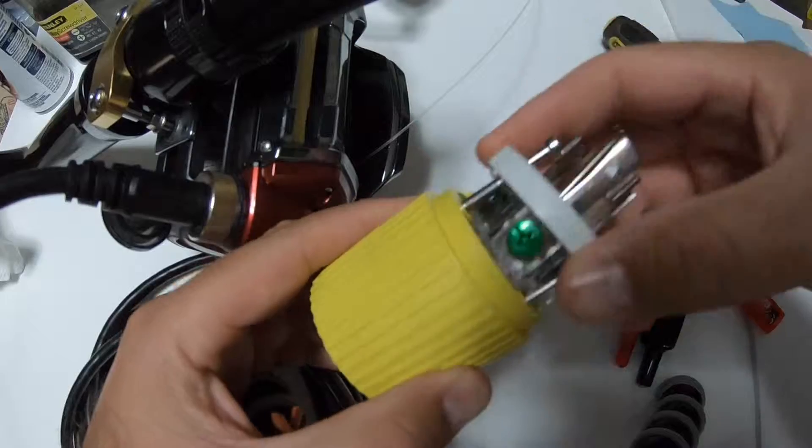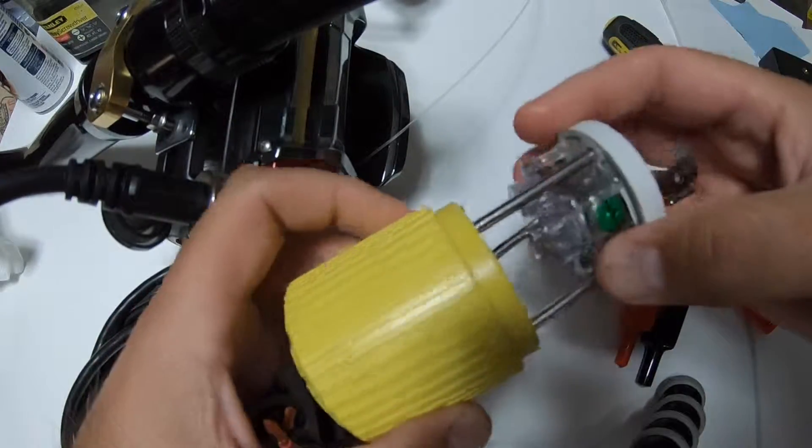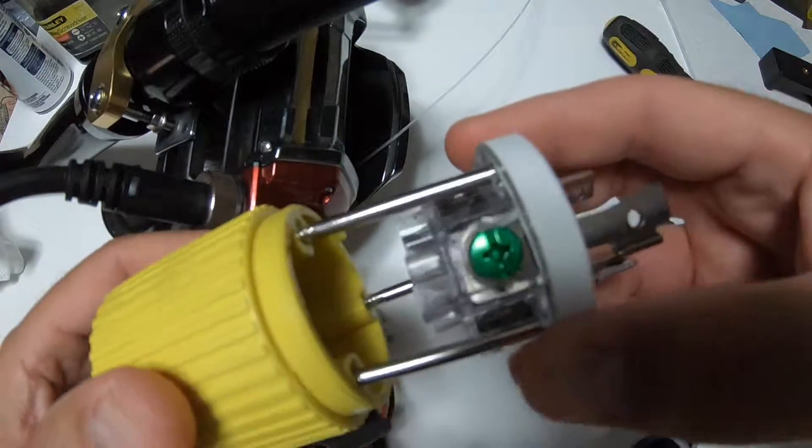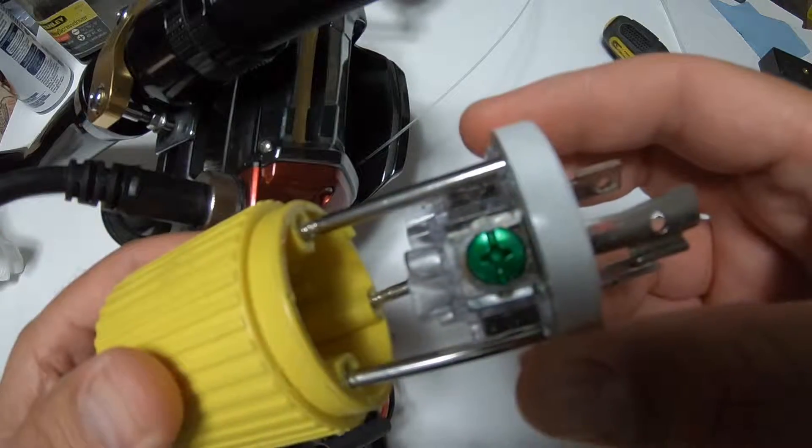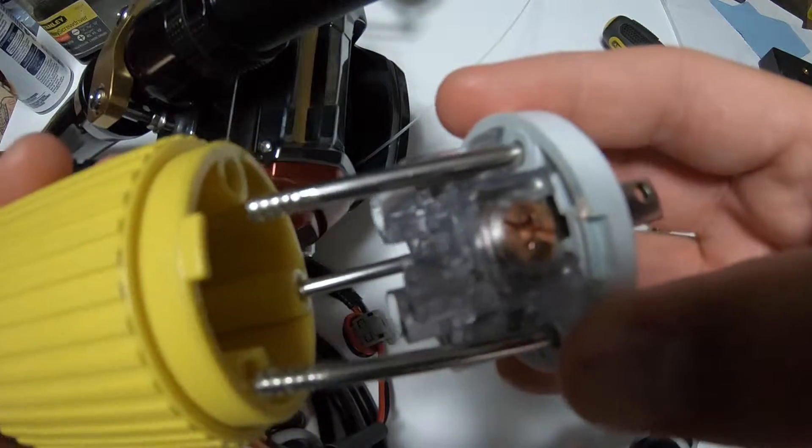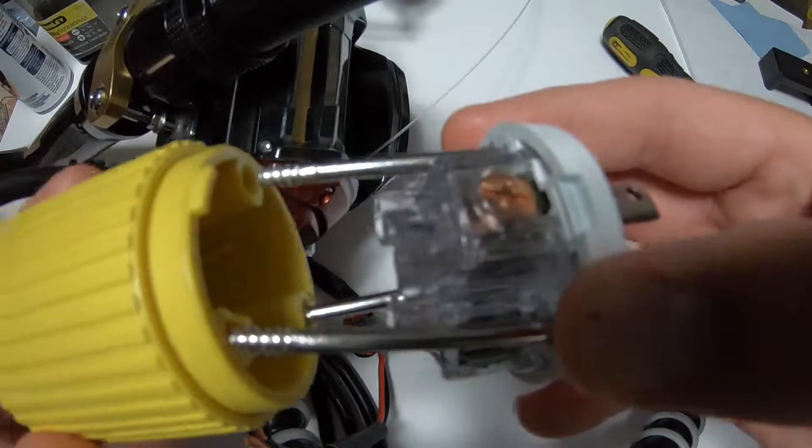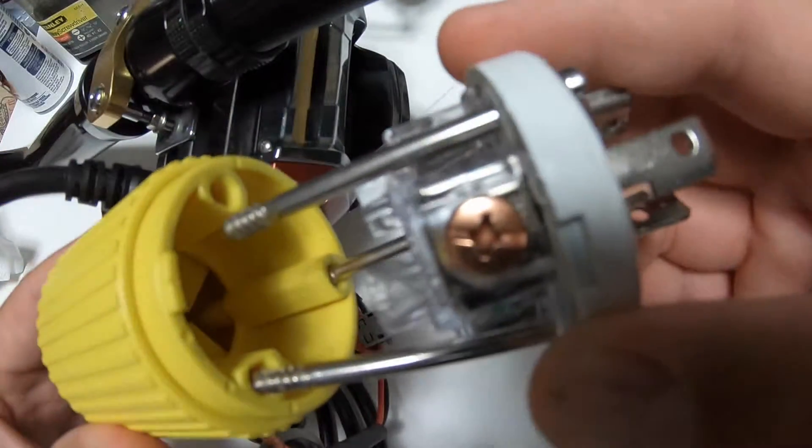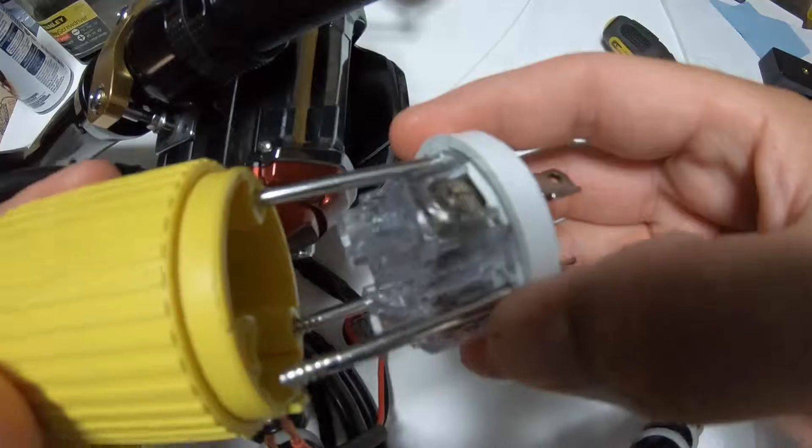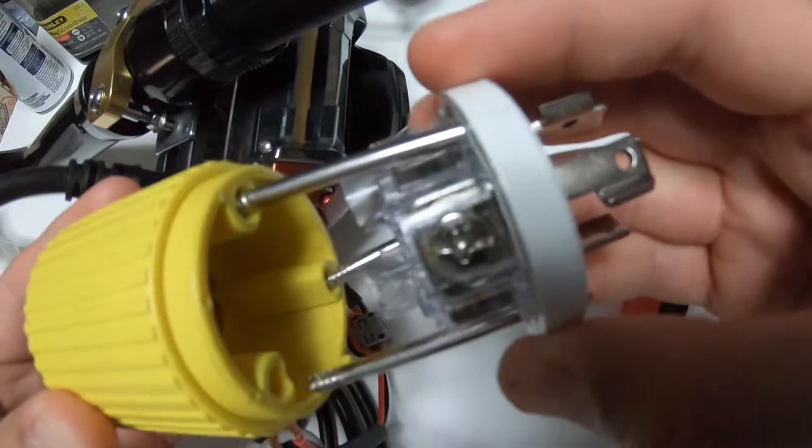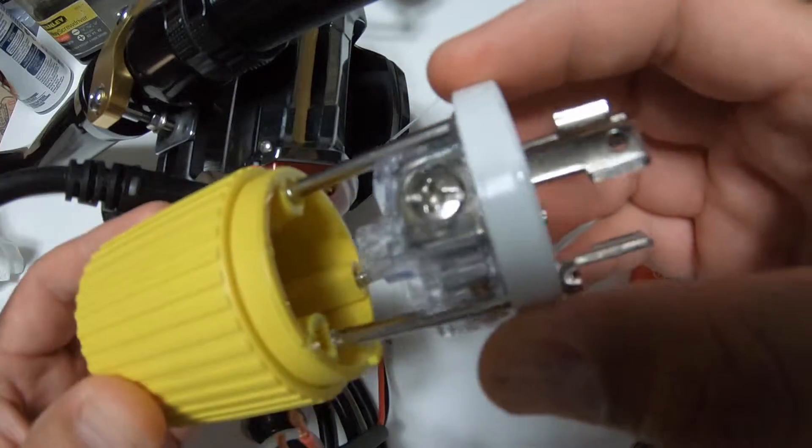So I already unscrewed it and you'll see that the plug has a green. That's for the ground. Looks like it's got a copper and that would be your hot wire. Your red. And then we also have the negative which would be the silver and that's where the black is going to go.